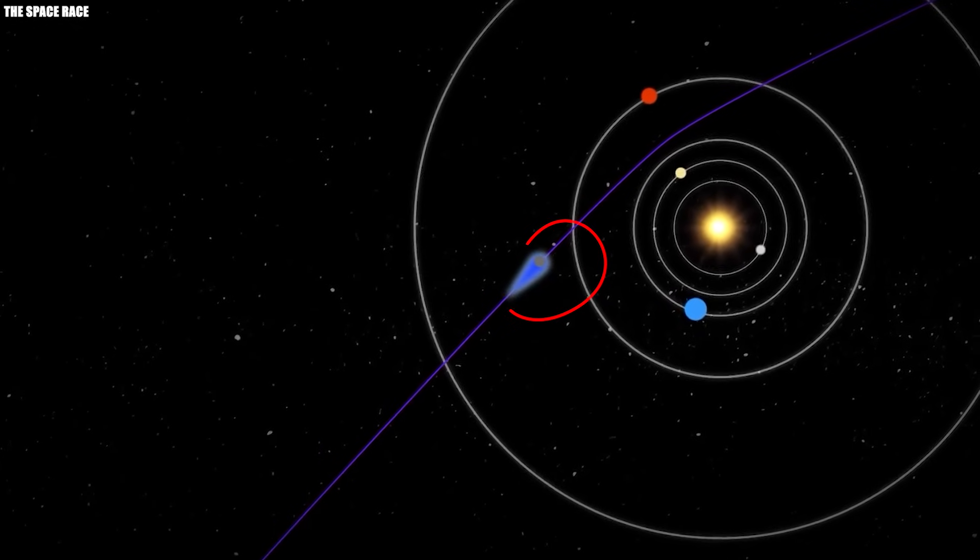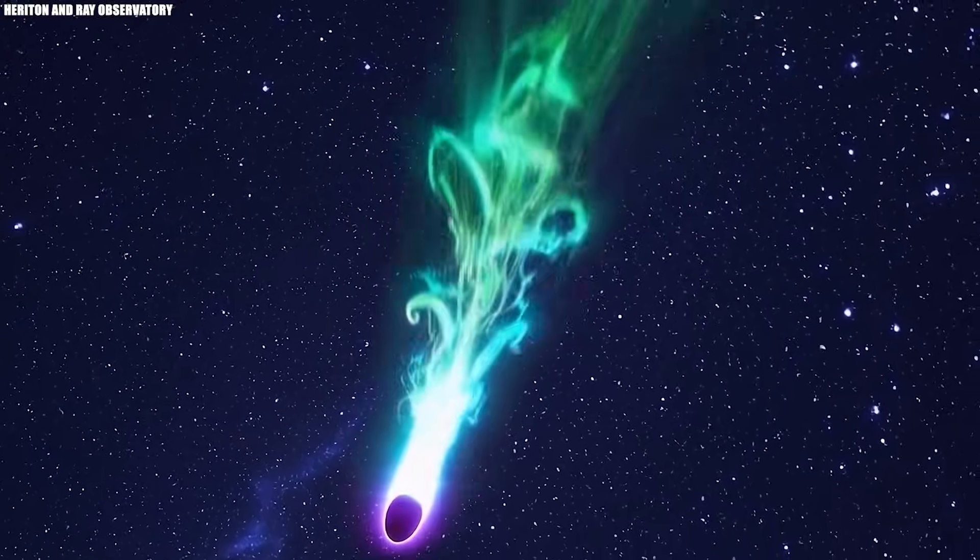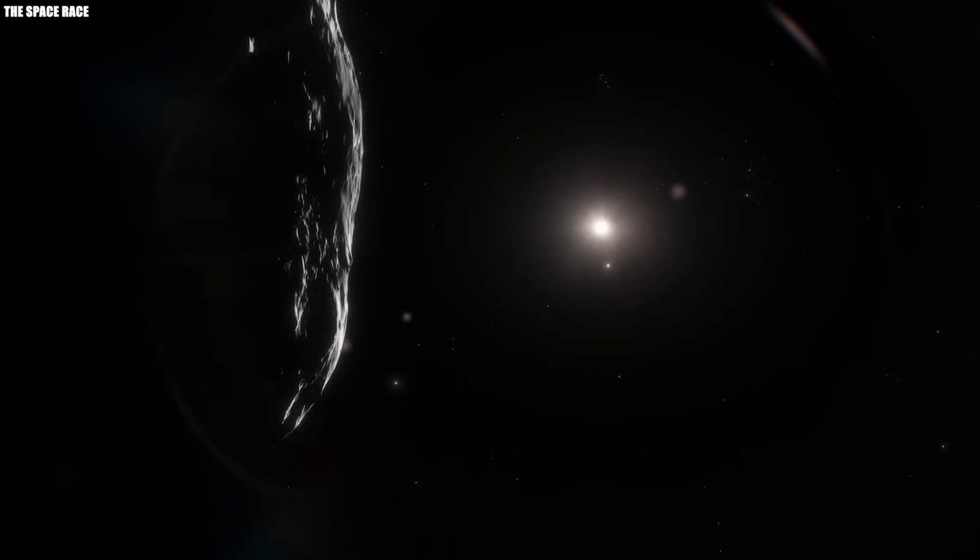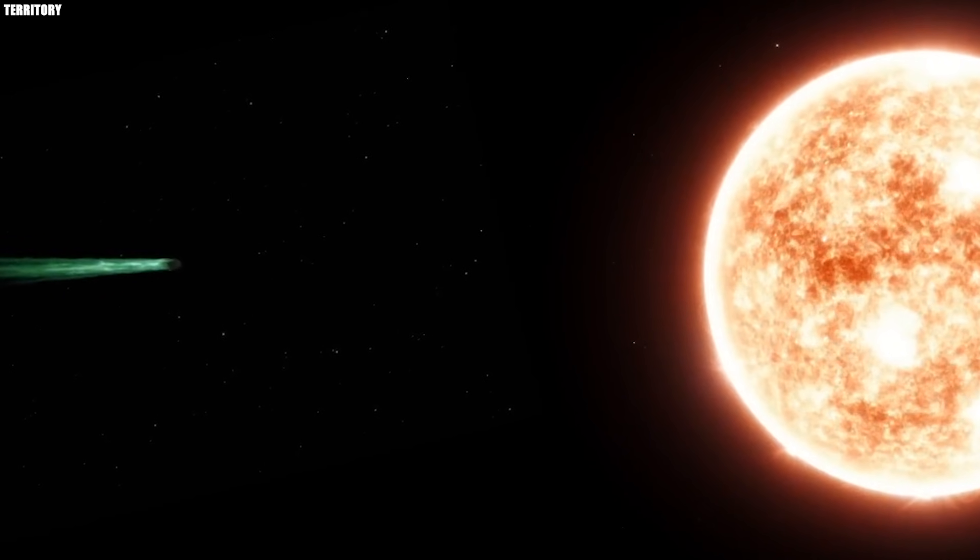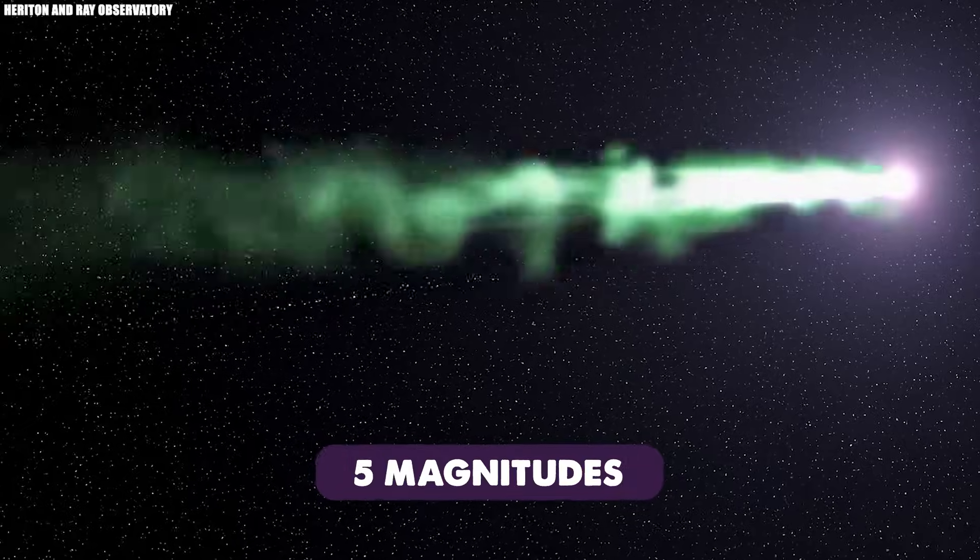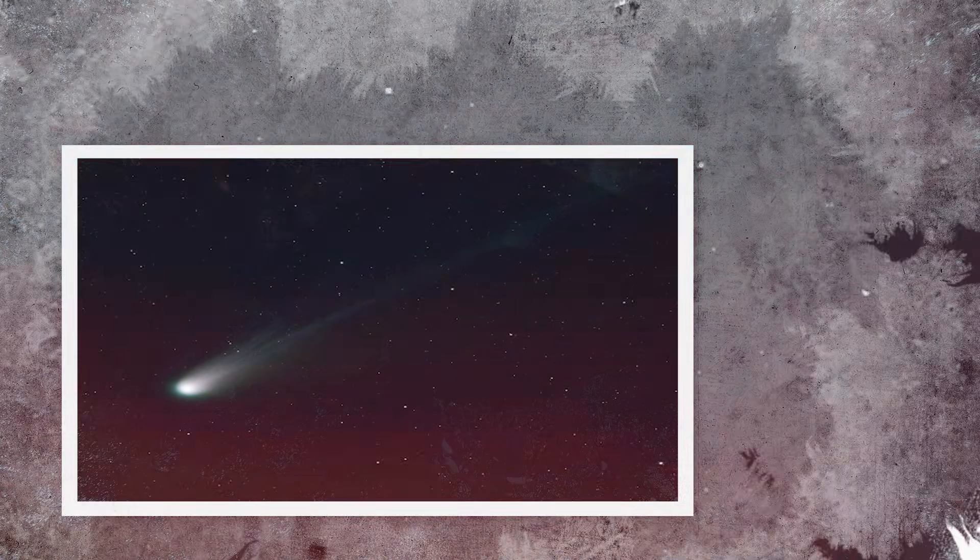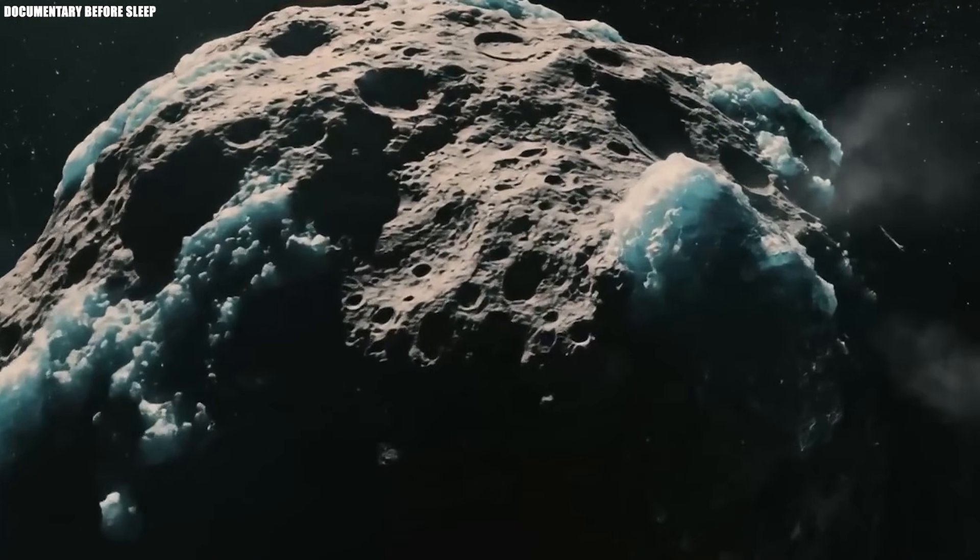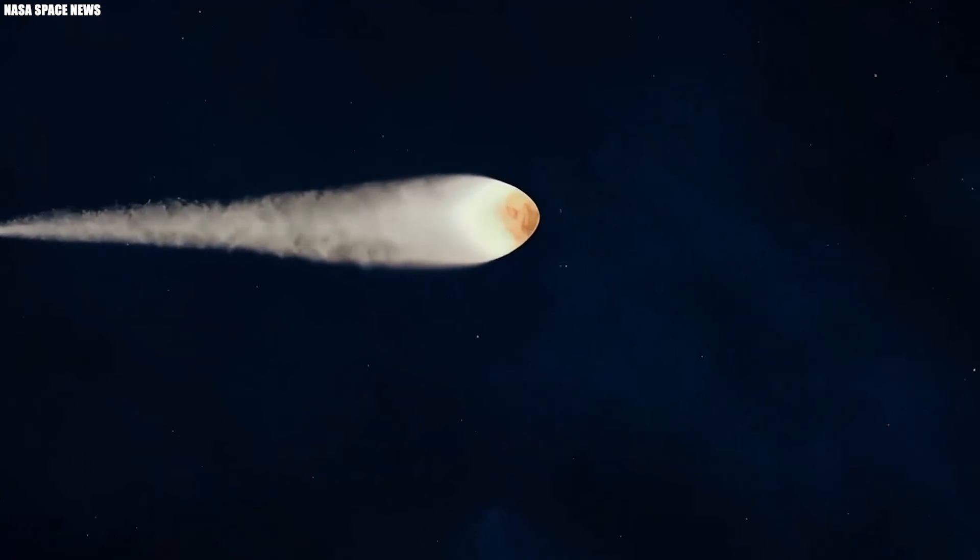3I Atlas started breaking expectations before it ever reached the inner solar system. It ignited and brightened. And it did it far too early. That was the first thing that caught attention. It lit up at a distance where sunlight should have been too weak to affect it. This was not a small spike. The brightness increased by more than five magnitudes in a window of less than six days. That kind of rise usually means something inside the object has changed. But the reaction did not follow the usual pattern. Comets brighten because of sublimation. Ice heats, turns to gas, and drags dust with it.